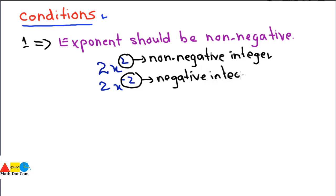So if the expression is not satisfying this condition, we will say the given algebraic expression is not a polynomial. This is the condition that is satisfied, and this is the condition that is not satisfied in case of the polynomial.